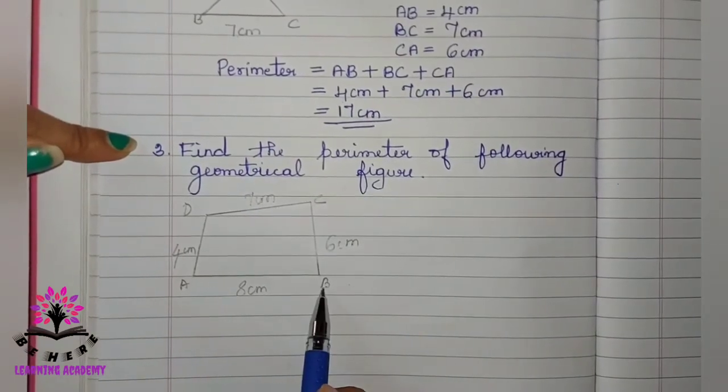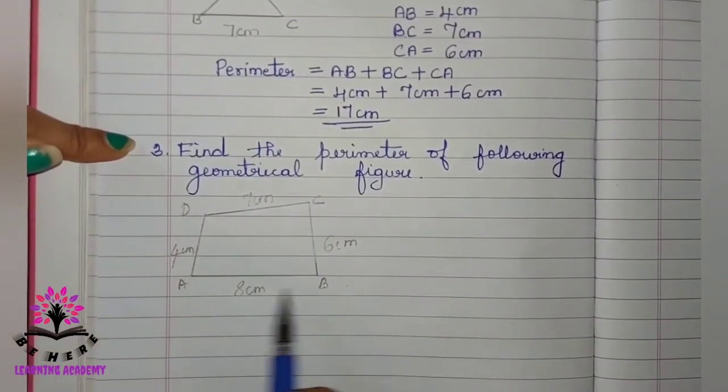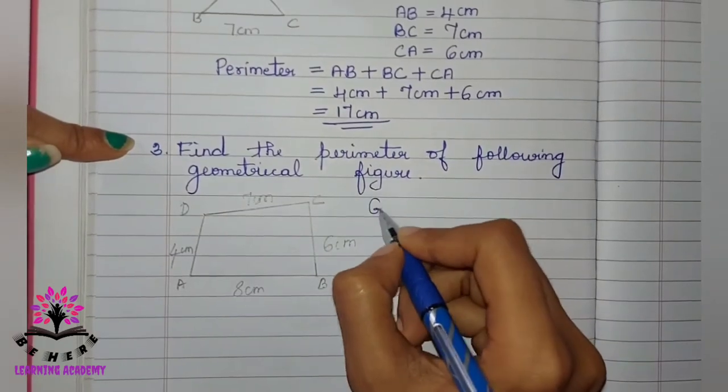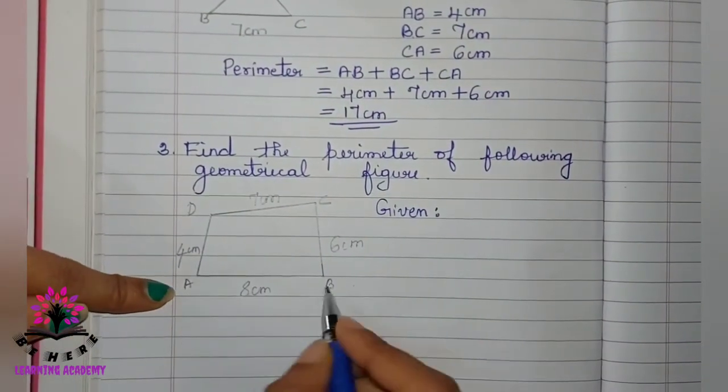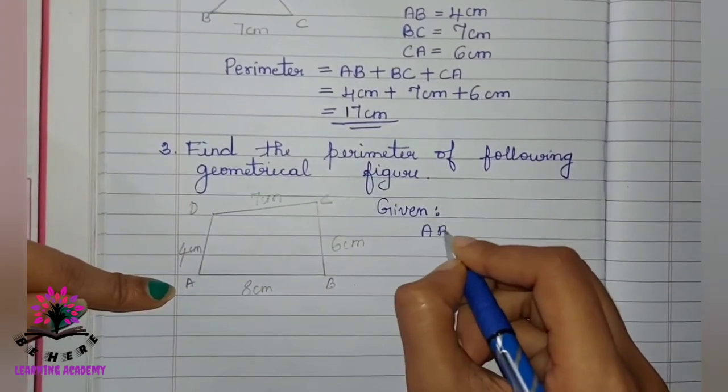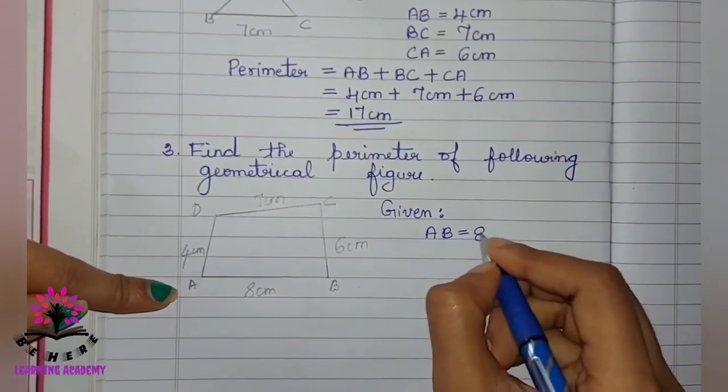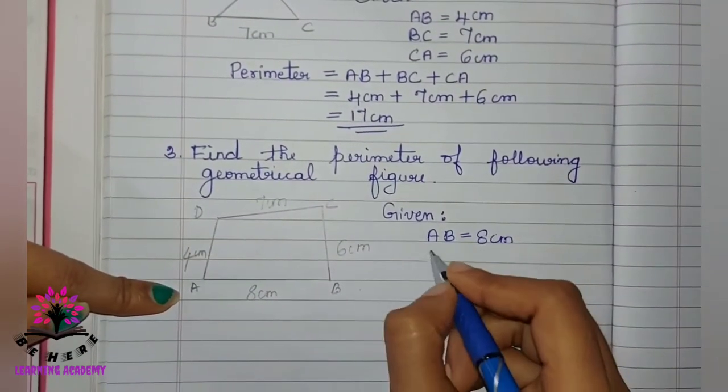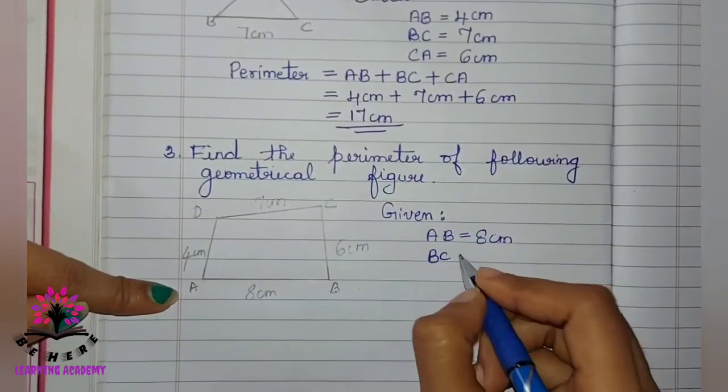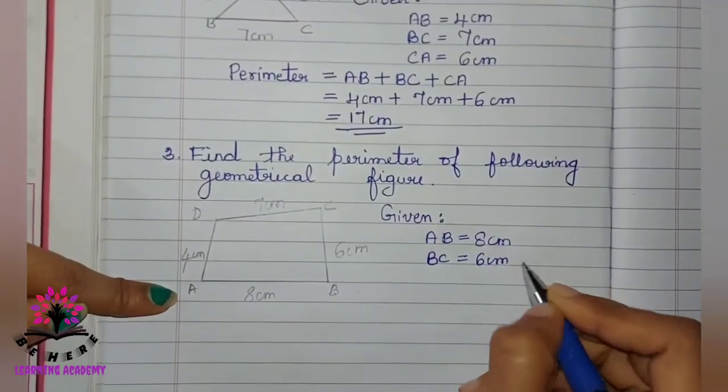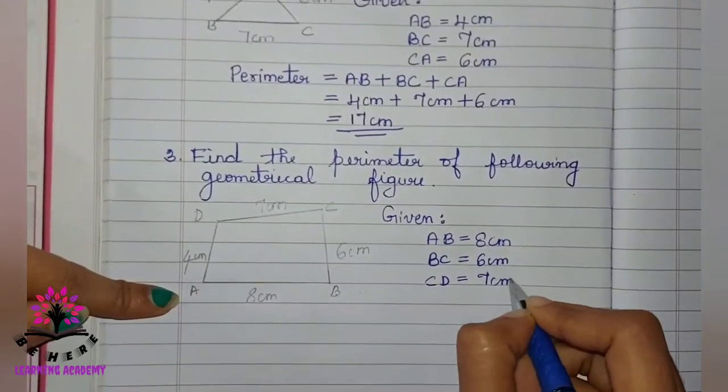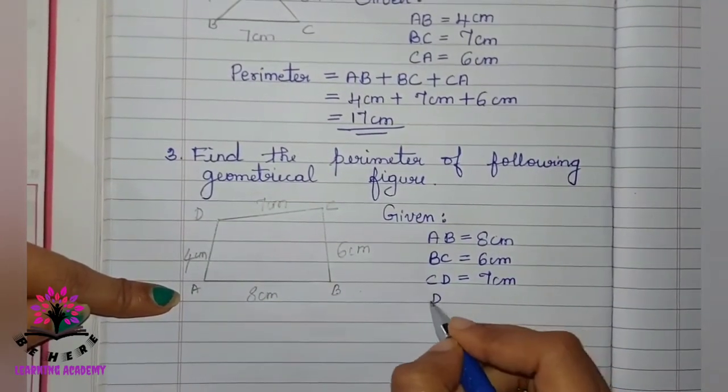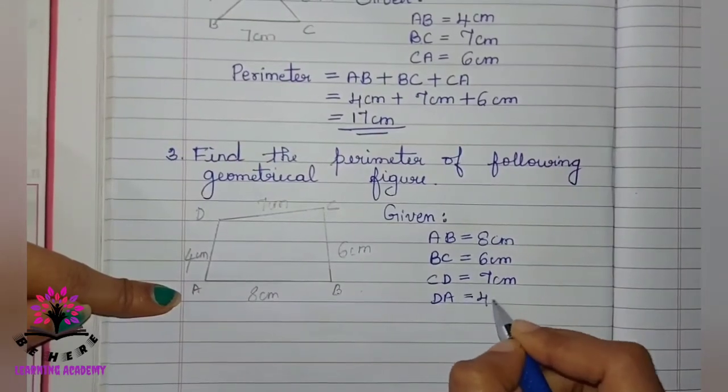First, you have to write the given elements in the geometrical figure. First side is AB. AB is 8 cm. Then, BC is equal to 6 cm. Then, CD is equal to 7 cm. DA is equal to 4 cm.